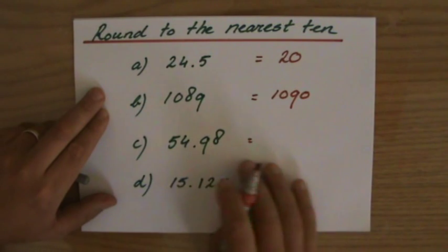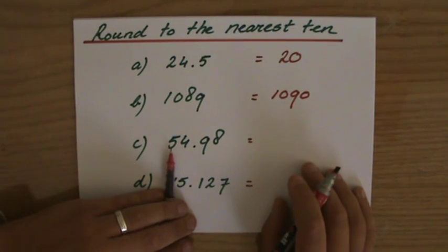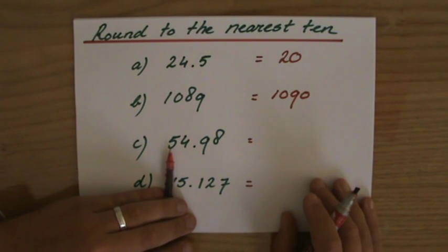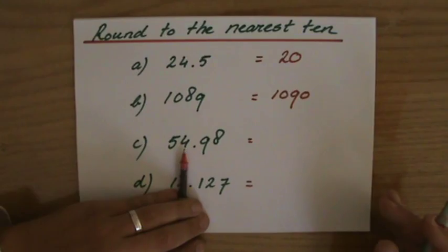54.98. The ten, that is my 5. Yeah, 5 tens. It stays a 5, it goes up to a 6. And it stays a 5.